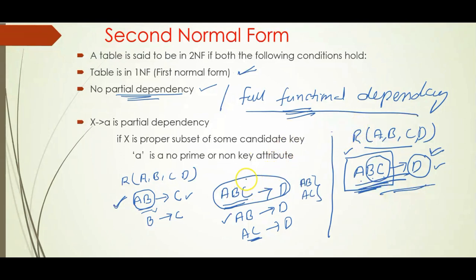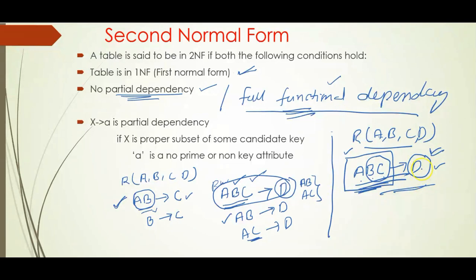To recap: if there is a functional dependency A,B,C → D and D is dependent on A,B,C, but D should not again be dependent on any subset of A,B,C — for example, if D is again dependent on subset A,B — then we say this is a partial dependency. When we can say it is a full functional dependency, there is no dependency of D on any other subset of this candidate key. So this means all non-key attributes are fully functionally dependent on key attributes. This is a simple example to understand the second normal form. Thank you.